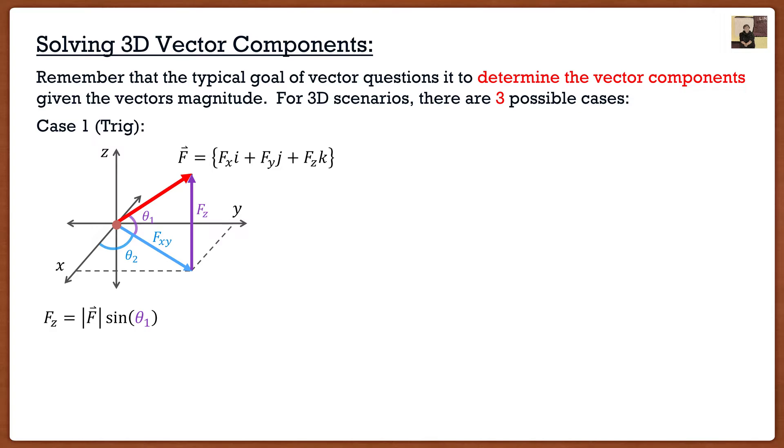Now if I were to do cosine I'm not getting fy or fx, I'm actually getting fxy, the vector in the xy plane. That's just taking the magnitude of f and multiplying it by cosine of theta one. So at this point I know one out of the three components. But what about the other two?